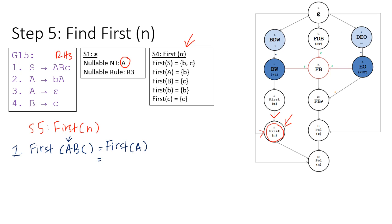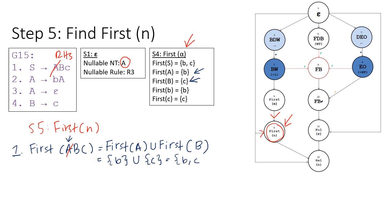FIRST(A) from step four is B. However, A is also a nullable non-terminal. Therefore, if we strike out A, the leftmost symbol can also be B. Therefore, we need to union FIRST(A) with FIRST(B). FIRST(B) from step four is C. So B union with C gives us the set {B, C}.